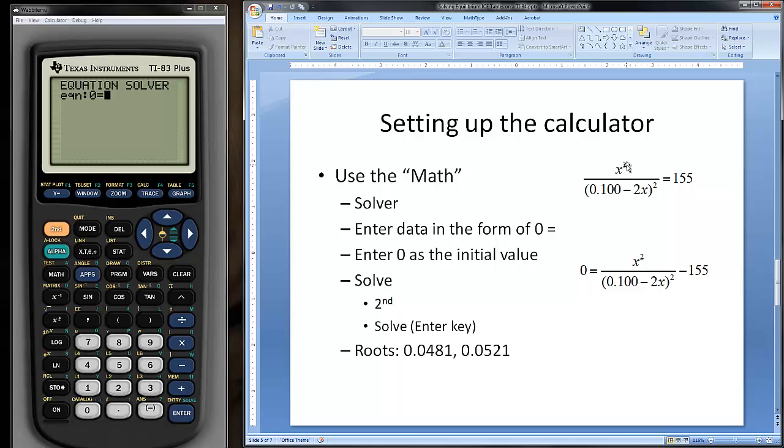So, X² divided by (0.1 - 2X)² equals 155. We just bring the 155 to the other side of the equation. So now this is what we have and this is what we'll type into the calculator. I use the variable expression here, the X, T, theta, and N, whatever it is over here, squared divided by—and I'll open up a parenthesis—0.1 minus 2X and then that whole quantity will get squared minus 155.